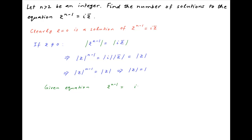Going back to the original equation, z raised to the power n minus 1 equals i times the conjugate of z, we multiply both sides by z. The left-hand side becomes z raised to the power n, and on the right-hand side, z times the conjugate of z can be written as the absolute value of z squared. Since we determined that the absolute value of z equals 1, the right-hand side simplifies to i.